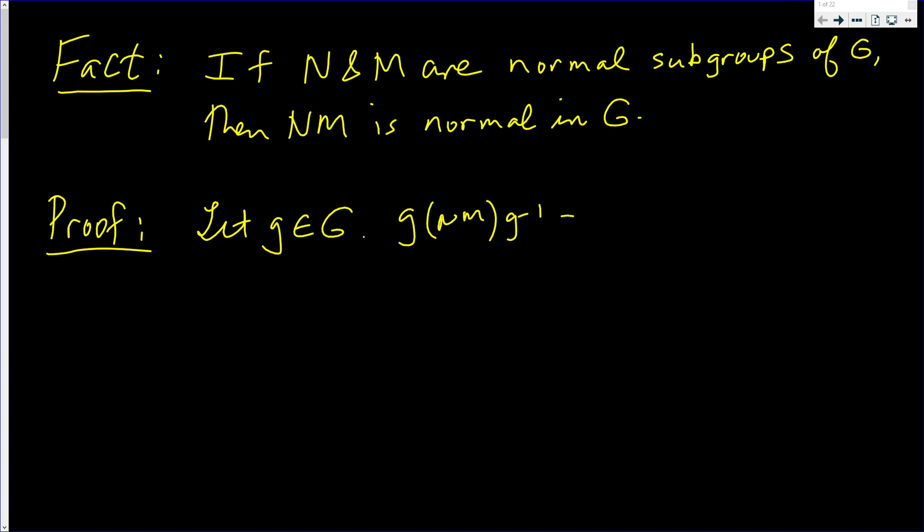Well, this here is the same as g times N, using the associative law, is g times N times M times g inverse.